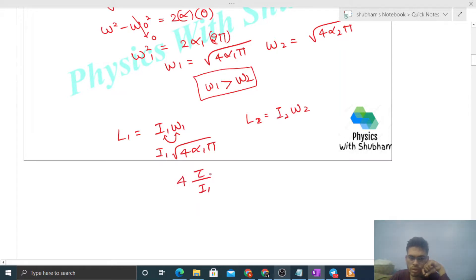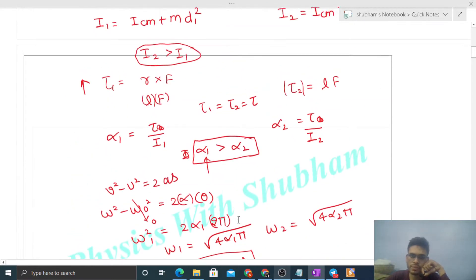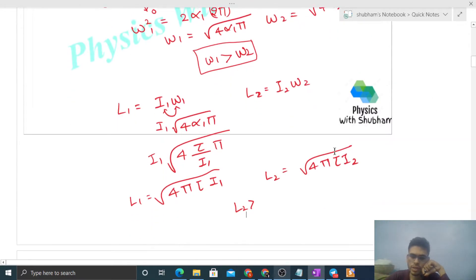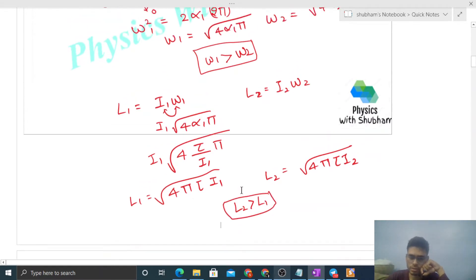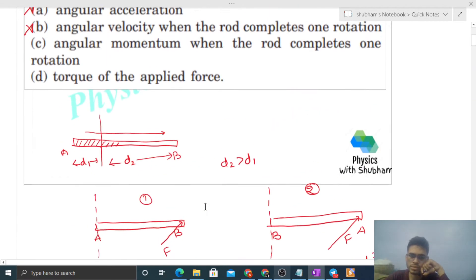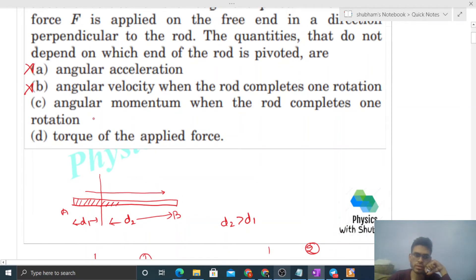Alpha one is torque upon I1, so this becomes square root of 4π torque I1. Therefore L1 equals square root of 4π torque I1, and L2 equals square root of 4π torque I2. Since I2 is greater, L2 will be greater than L1. So angular momentum is also not the same.